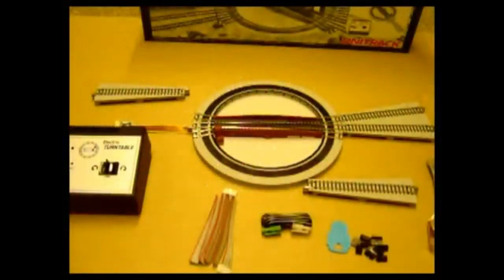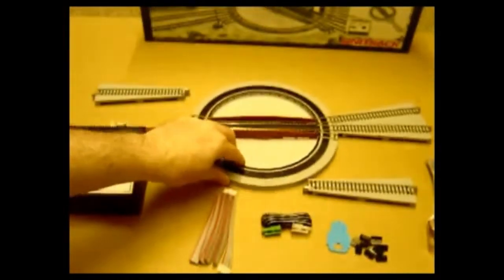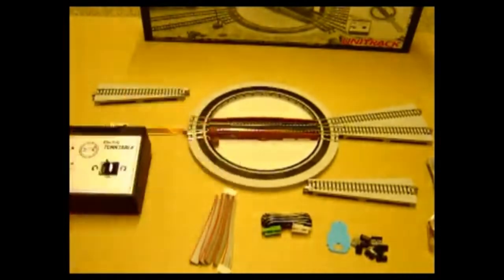This is the new Kato Unitrack Turntable. It's designed to be a tabletop operation, so it's quite a shallow shape. You can recess it into a layout if you want to use it in a permanent situation.